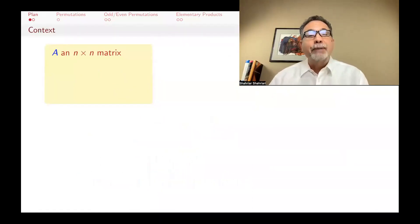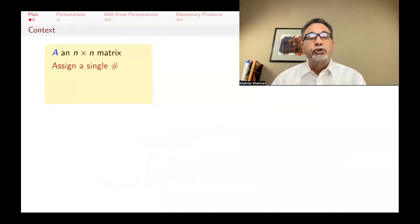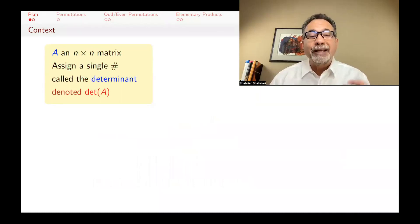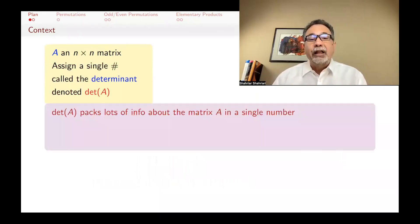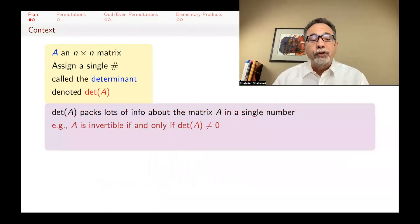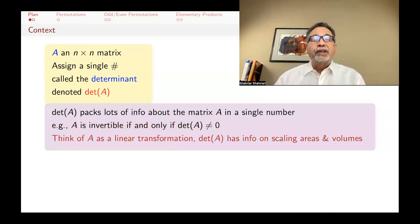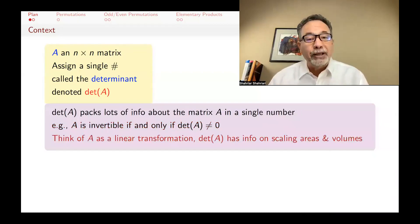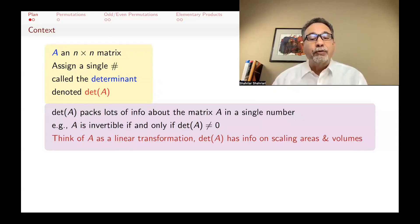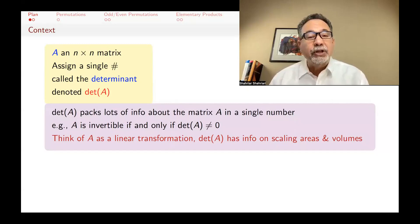The context is that we have an n-by-n matrix, and what we want to do is assign a single number called the determinant, denoted by det(A). This number packs a lot of information about the matrix. For example, A will be invertible if and only if the determinant is non-zero. If we think of A as a linear transformation, the determinant has information about how that transformation scales areas and volume.